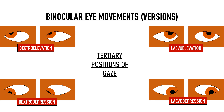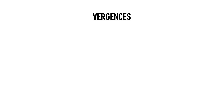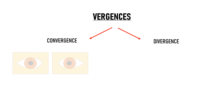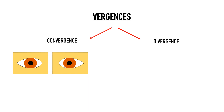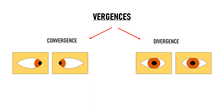Vergences refer to binocular eye movements when both eyes move together but in opposite directions. There can be convergence or divergence. In convergence, the right eye moves to the left and the left eye moves to the right, so the eyes move closer to each other. In divergence, the right eye moves to the right and the left eye moves to the left — they move away from each other. This is horizontal divergence.